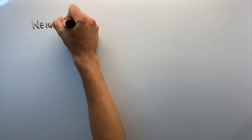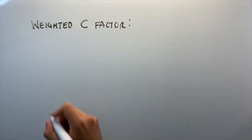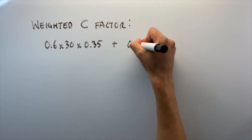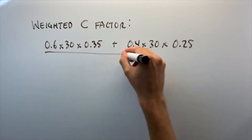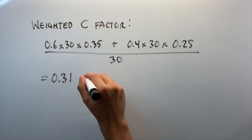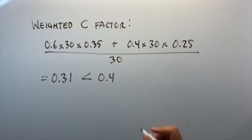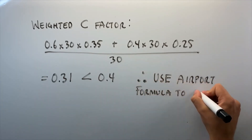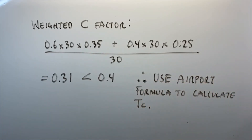We're also given that 60% of the area has C = 0.35 and 40% has C = 0.25. First, we calculate our weighted C factor: (0.6 × 30 × 0.35 + 0.4 × 30 × 0.25) / 30 = 0.31. Since 0.31 is less than 0.4, we use the airport formula to calculate Tc.